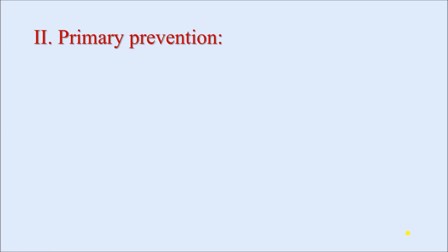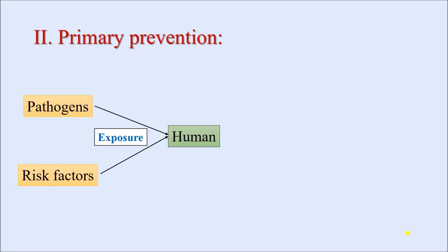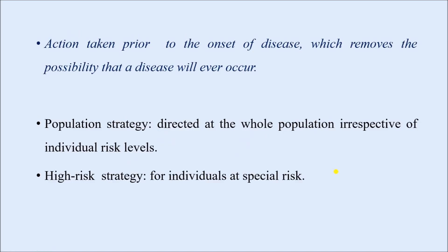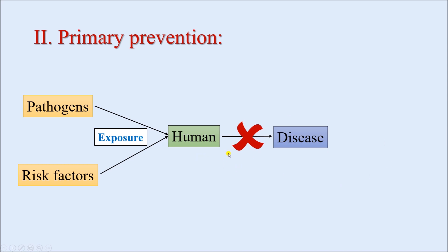Next is primary prevention. Here, you already have the pathogen and risk factor — we could not control or prevent their development, and the human population is exposed to them, which leads to the causation of disease. Now, if we could do something so that even after this exposure the disease can be prevented, that is considered primary prevention. By definition, it is action taken prior to the onset of disease which removes the possibility that a disease will ever occur — we are doing something so that the disease does not develop at all.